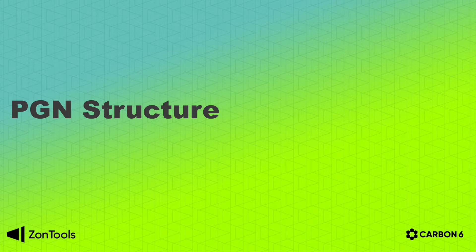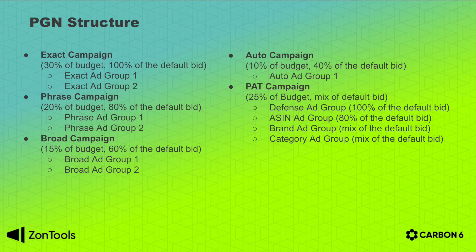The PGN includes the new product attribute targeting campaigns and the new enhanced auto-target. The structure of the PGN is composed of an exact campaign, a phrase campaign, broad campaign, an auto campaign, and the product targeting or PAT campaign.